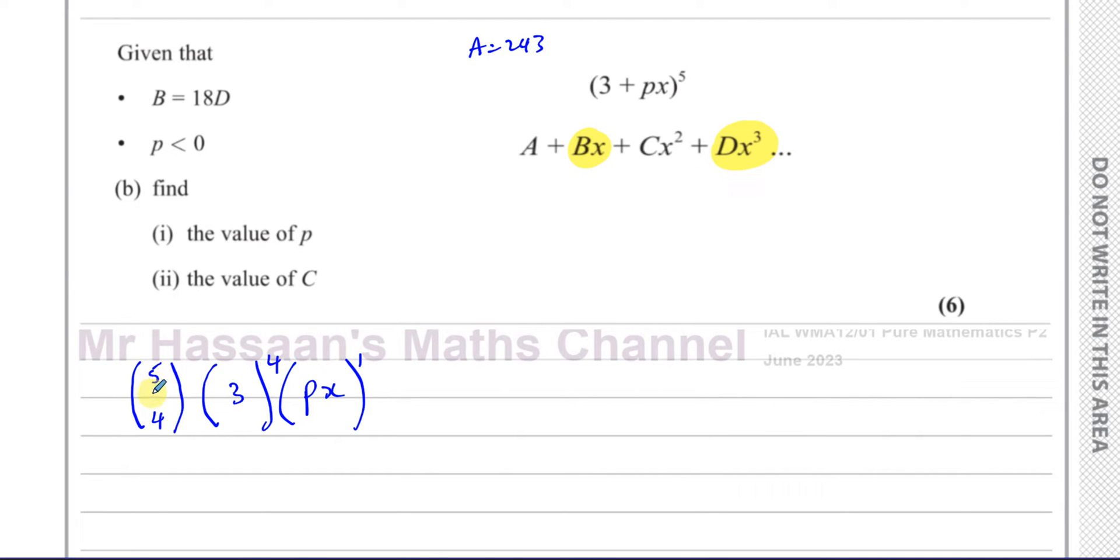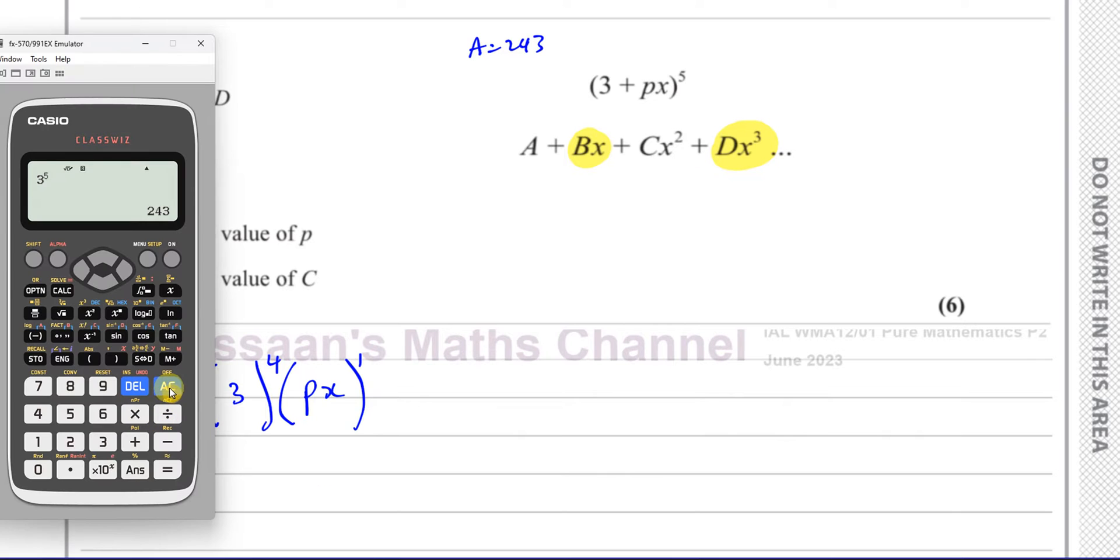When we use this nCr for binomial expansion, these two numbers will always add up to give you this. And the number under here can either be this number here or the number there. I can put 4 here or I can put 1 here, it will give me the same answer because that's like the coefficient from Pascal's triangle will be symmetrical.